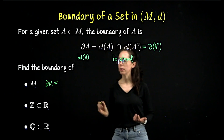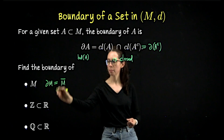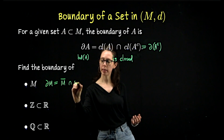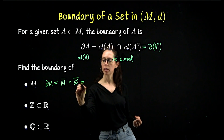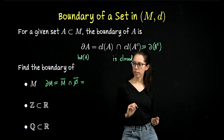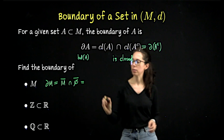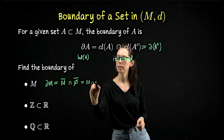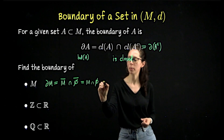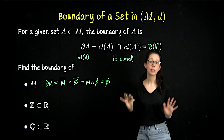The boundary of M is going to be the closure of M — I'll write M bar — intersect the closure of the complement of M, which is the closure of the empty set. Both of these sets are always closed in any metric space, so this is really asking: what is the intersection of the metric space and the empty set? That has to be empty. So the boundary of any metric space is empty.